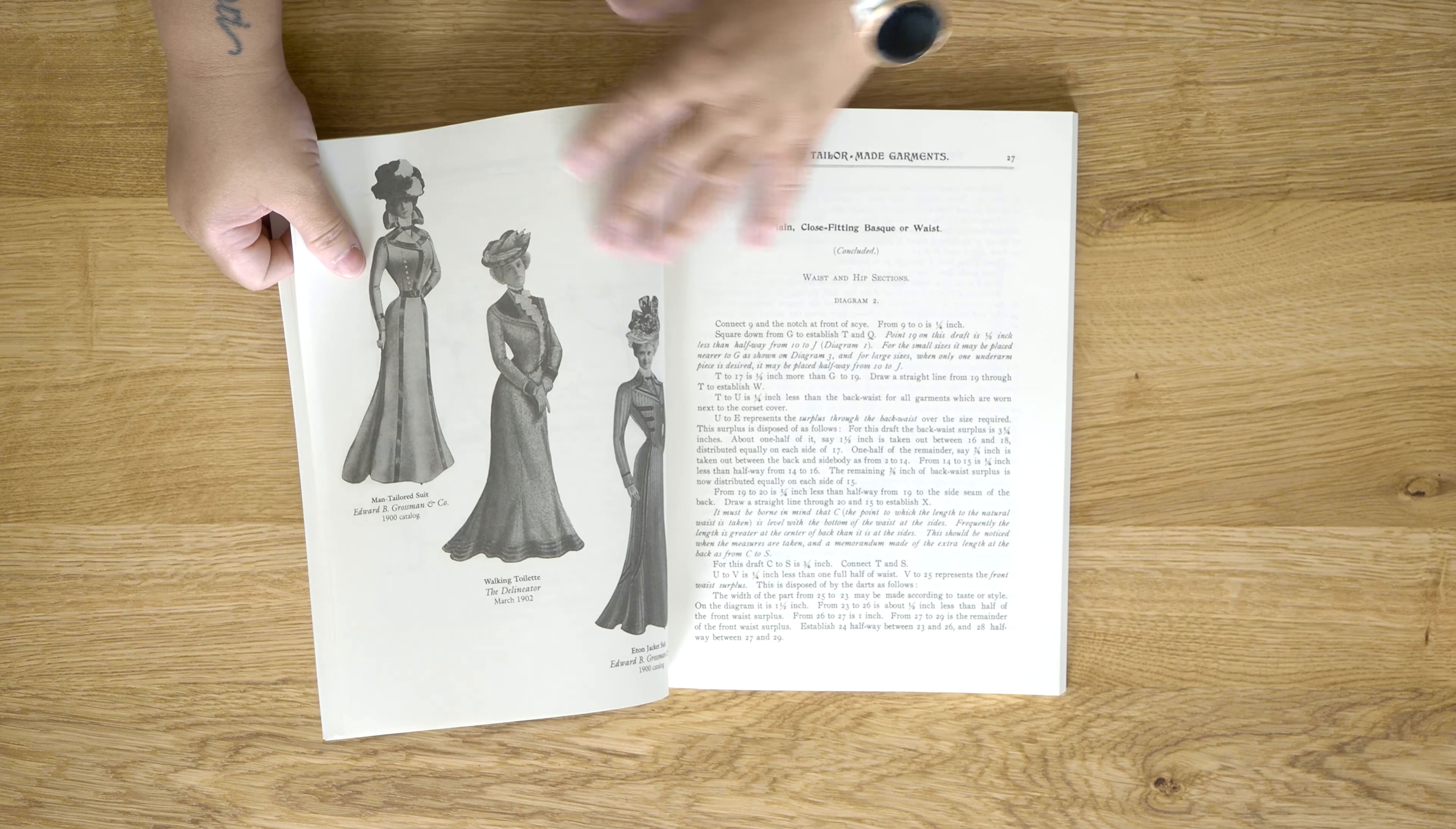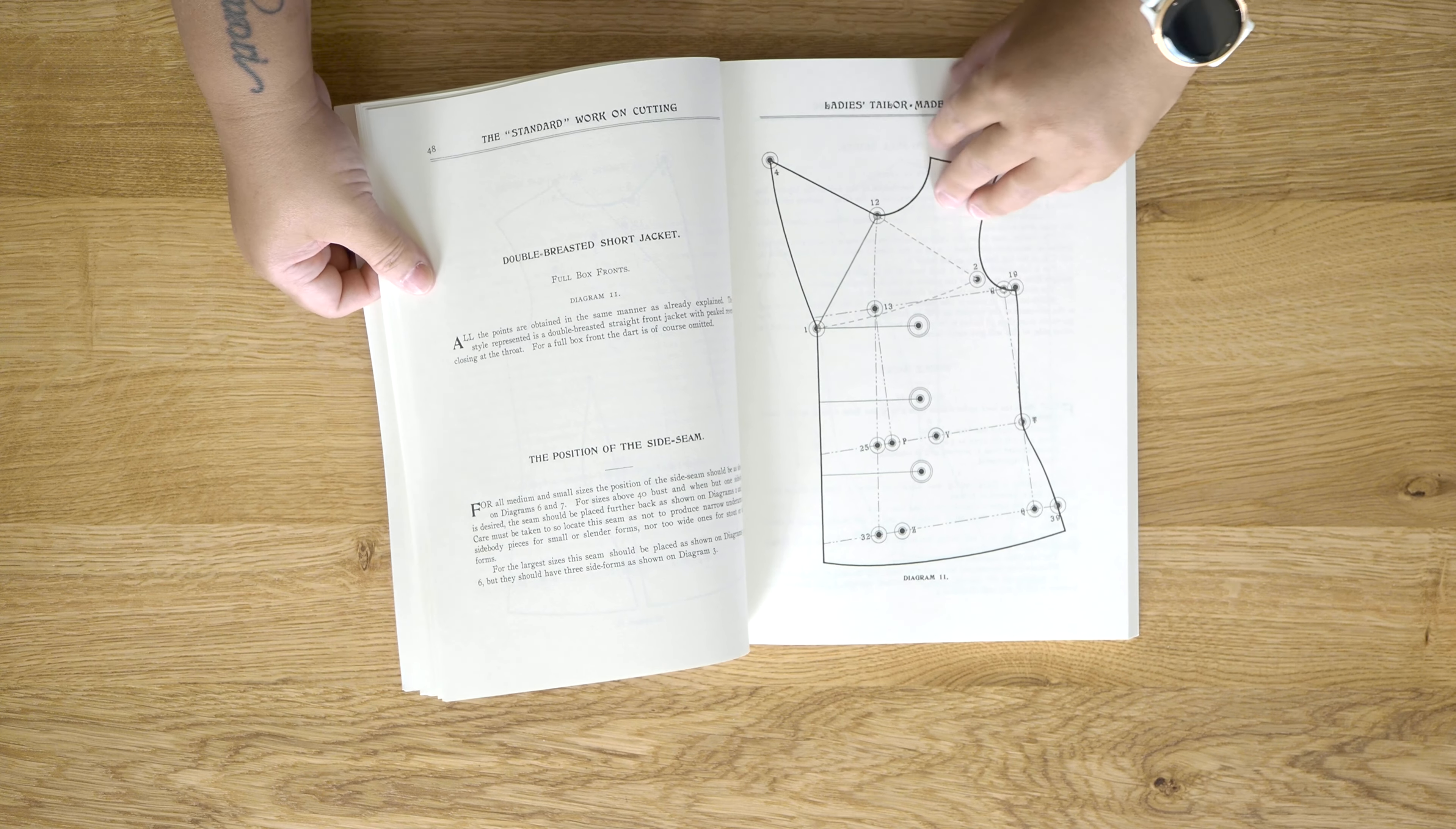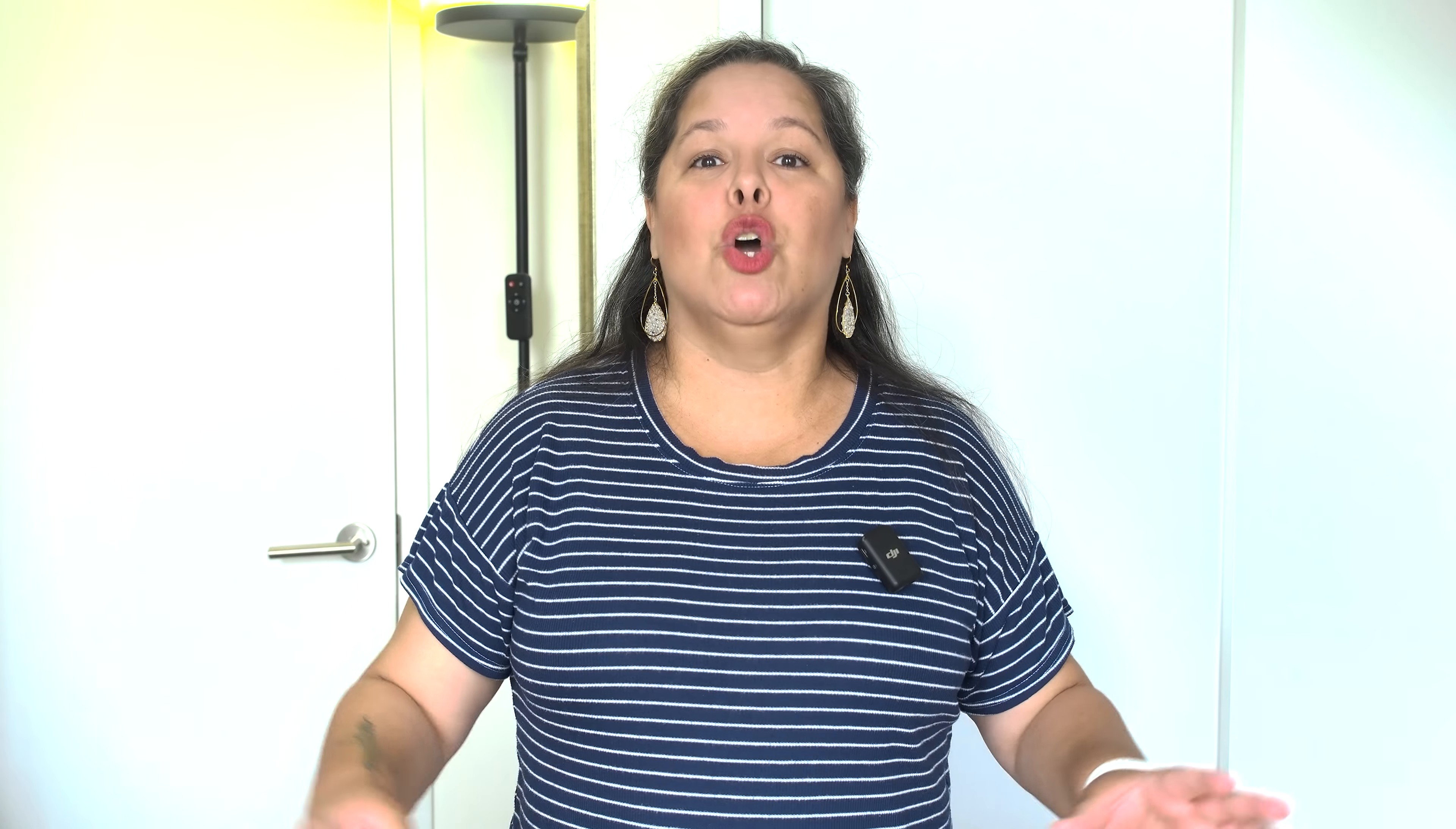It shows you how to take your measurements and then once you have taken all of those measurements you get to draft your pattern specifically to your body rather than roughly just to your bust. So this is a lot more accurate and you probably would have to do fewer adjustments later on. This is from 1901 and it has fewer images of the styles but very detailed explanations about how to draft. You have everything from jackets to blouses, skirts, sleeves and everything in between.